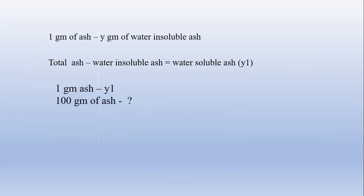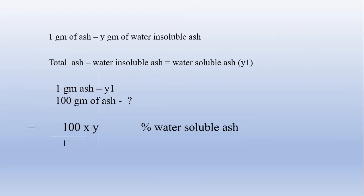So, let's say the water-soluble ash is y1 grams. If 1 gram of the ash gives y1 grams of water-soluble ash, then for 100 grams of ash, by cross multiplication — 100 into y1 divided by 1 — that is the percentage of water-soluble ash. Friends, if you are new to this channel, I request you to subscribe and give likes to this video. Thank you.